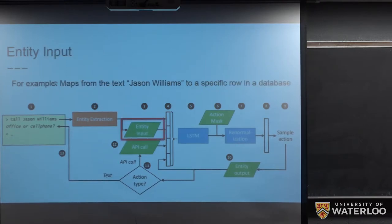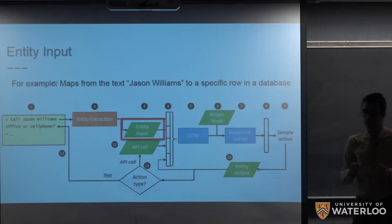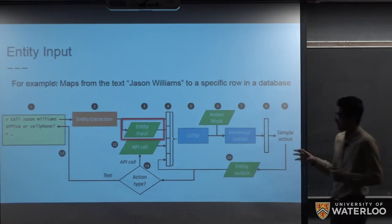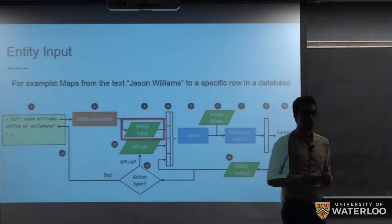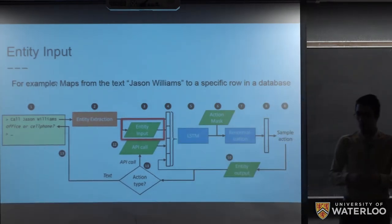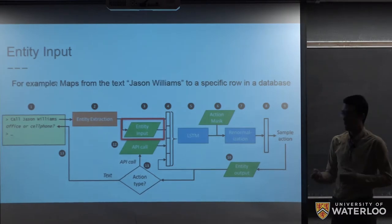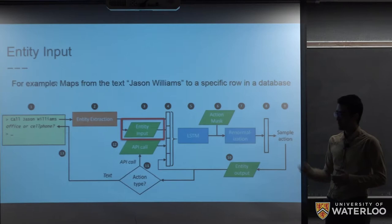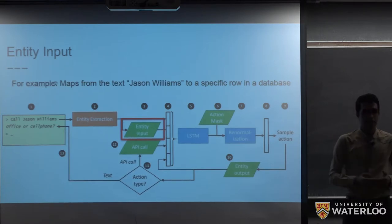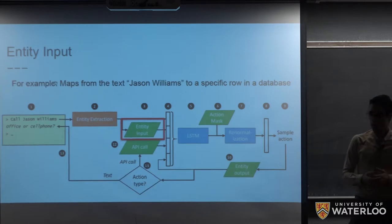So the task of this module is to extract the entities of the text. For instance, if the user input is called Jason Williams, in that case, the entity extraction module would extract Jason Williams and label it as a name entity. The third part is entity input, which is a code provided by the developers. So the task of this module is to map from the extracted entity to a row of a database. So in our example, if we could find Jason Williams in the database, then the output of this module is that, okay, there is a match to the name. And for example, Jason Williams has two phone numbers in the database.